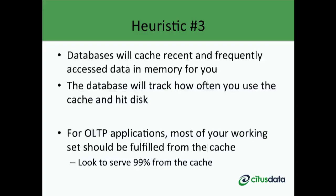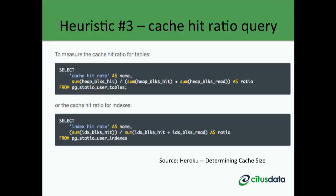A third heuristic relates to how much of your working set your database can serve from memory. Most databases track how often you hit the cache versus issuing disk IO. For OLTP applications, most of your working set should be served from cache — ideally 99% of lookup queries. In Postgres, you can calculate your cache hit ratio by running two queries: one calculates the cache hit ratio for tables, and the other for indexes. If that ratio starts to drop below 99%, it may be a good time to start thinking about horizontally scaling.